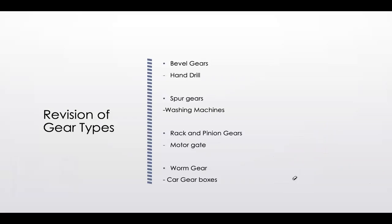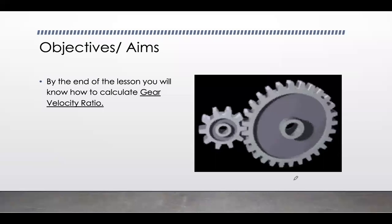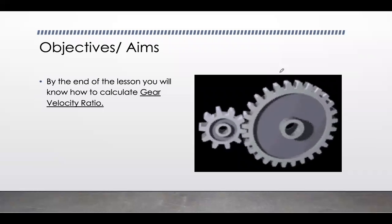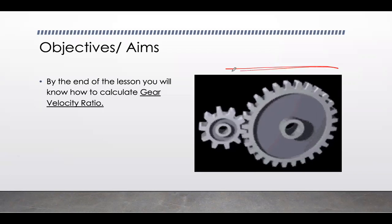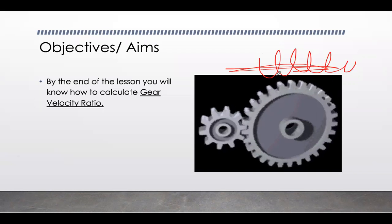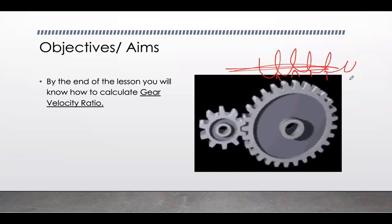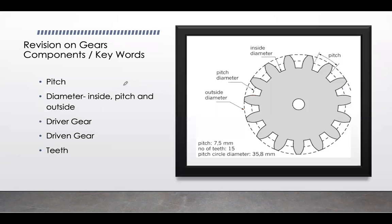We also get a worm gear, which looks like a coil or spiral. It consists of a shaft with a coil-like thread around it, and the teeth link up into grooves, allowing it to change motion direction as well.